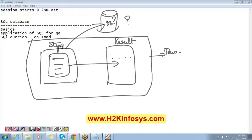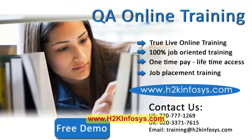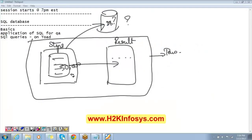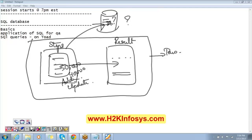Now let's say a person tries to modify details in his loan application — he initially applied for $50,000 but now wants $40,000, or he wants to change his mailing address. He clicks the update button, gets a message that updates are done — but are you sure these updates are also made in the database? We need to check that using back-end or database testing. You can cross-verify whether data is getting saved and modified in the database.